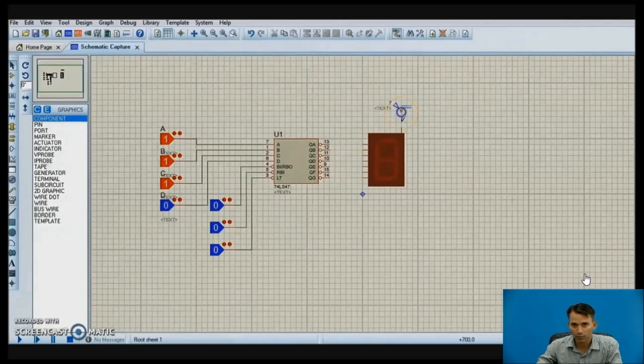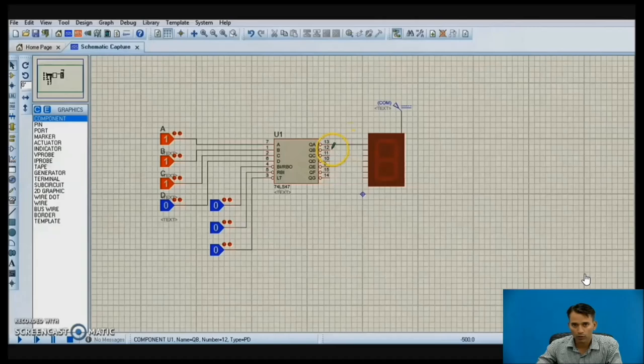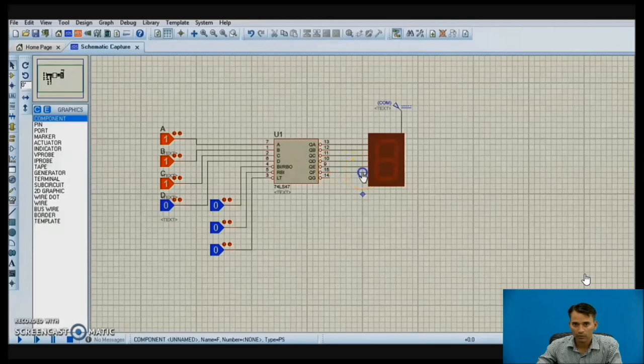Now let us make connections from decoder or driver IC to 7-segment display. This is also very simple, there are 7 connect points we have to connect. After connecting, we can just simulate.